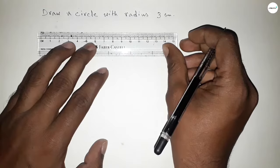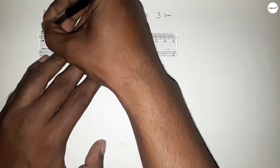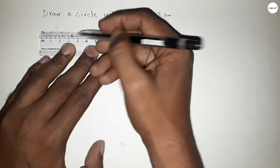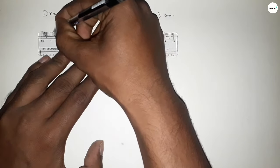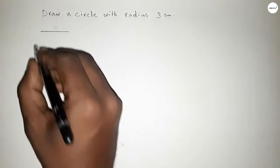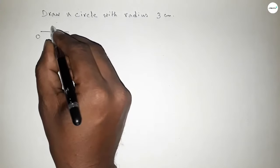First, drawing a line of length 3 centimeter by using scale. This is starting at 0, next this is 1, 2, and 3. So first drawing here a line of length 3 centimeter, and this is O and this is P. So line OP equal to 3 centimeter.